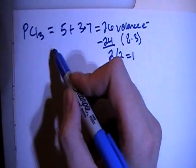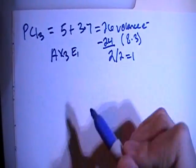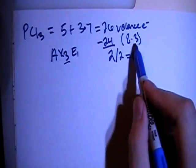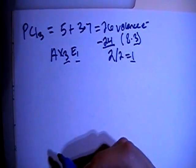So that's going to be an AX3E1, 3 from this, 1 from this. So that's going to be the type of structure, so let's go ahead and draw it.